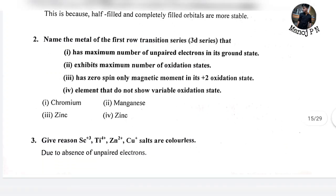Name the metal of the first row transition series that has the maximum number of unpaired electrons in its ground state. The answer is chromium. Please remember this.